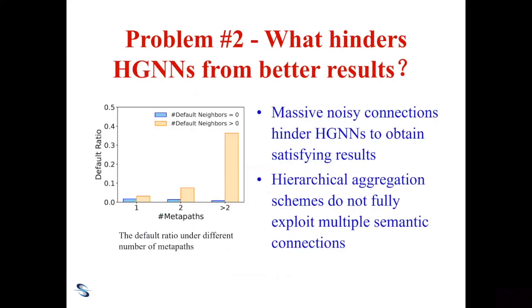The second problem is: what hinders HGNs from better results? HGNs have to face two challenges. First, massive noisy connections hinder HGNs from obtaining satisfying results. Second, existing aggregation schemes do not fully exploit multiple semantic connections. The data analysis on real financial graphs shows that more metapaths between companies and default neighbors lead to higher default risk, verifying that multiple semantic connections have great impact on small company defaults.